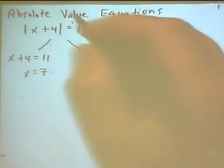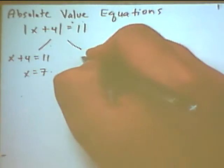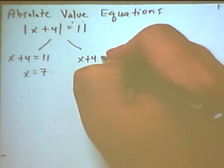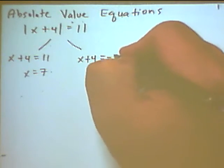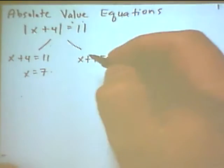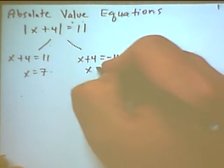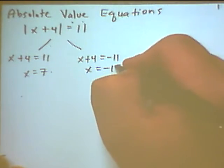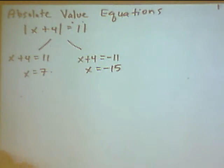Now, the second problem is you drop the absolute value signs, but then you make the number a negative. So I'm going to have x plus 4 equals negative 11. And now I solve this equation, subtract 4 from both sides. x equals negative 15. So there are my two solutions.